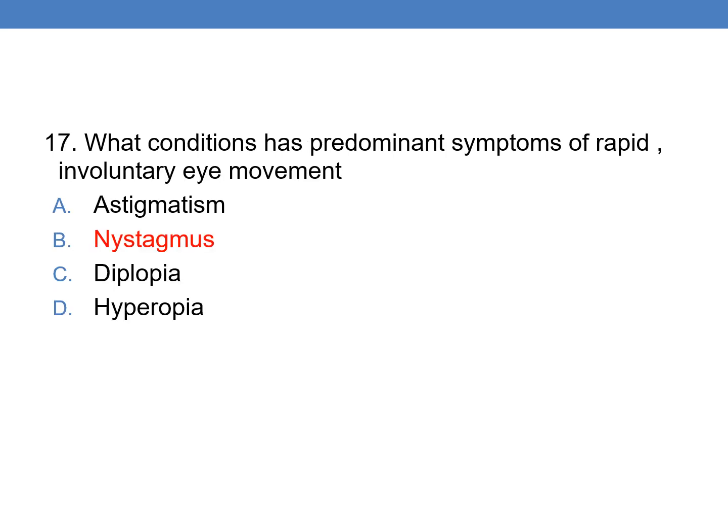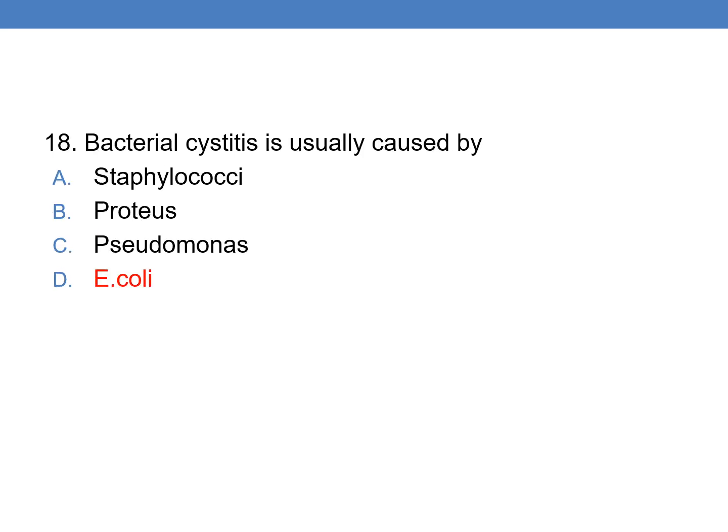Which condition has the predominant symptom of rapid involuntary eye movement? Nystagmus is a condition which has rapid involuntary eye movements. Next, bacterial cystitis is usually caused by Escherichia coli.